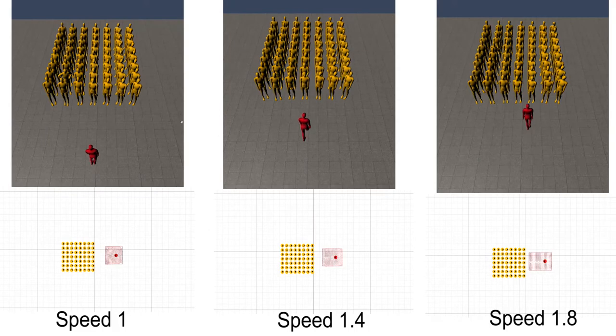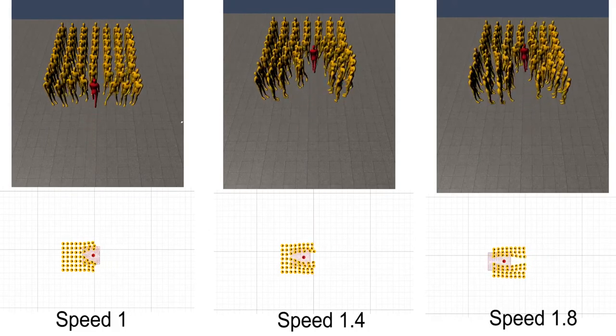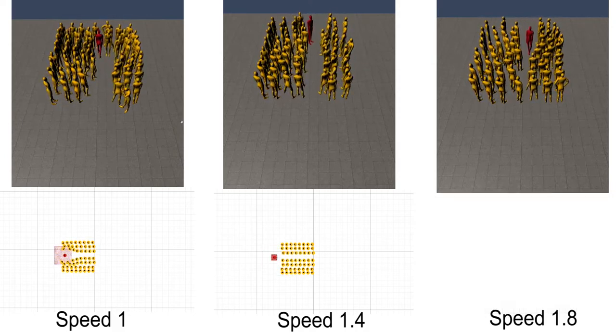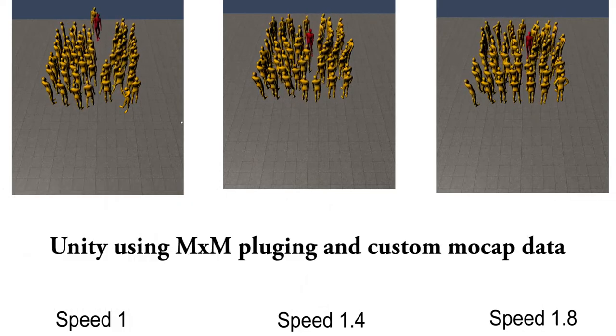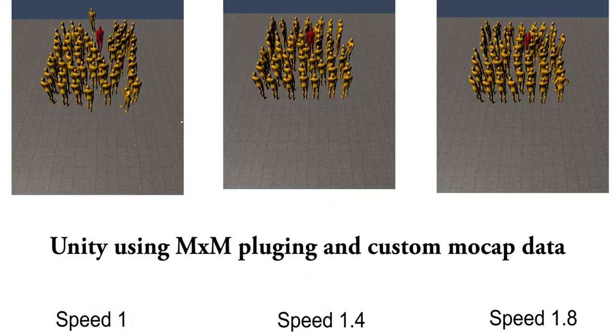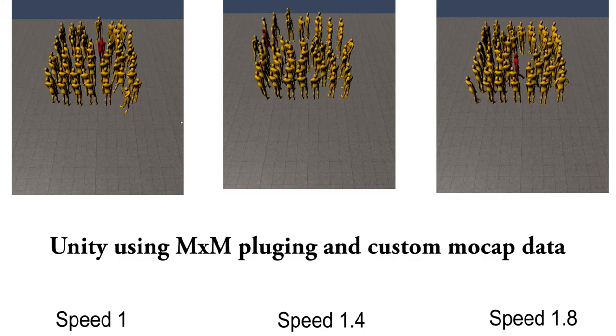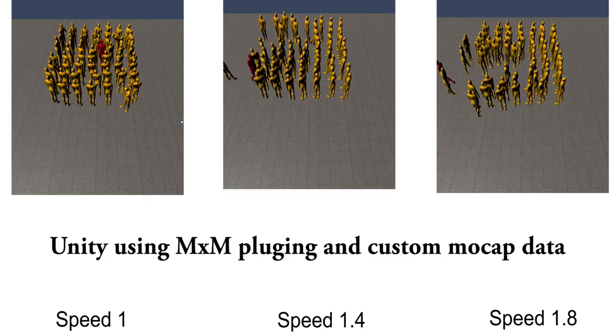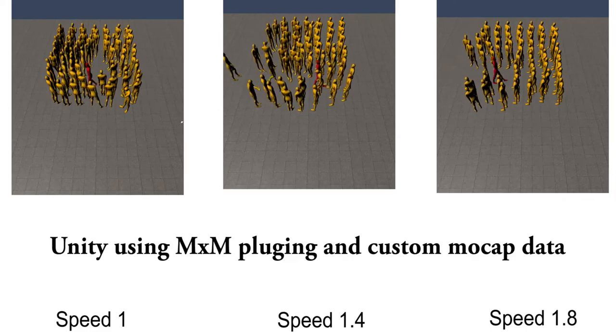By using a motion matching plugin on Unity called MXM, we can animate the trajectories obtained with interaction fields using a custom dataset. MXM selects automatically the closest animation to the trajectories and blends between the animations to transition. This allows us to have realistic motion on top of interaction fields. The red agent is controlled using the keyboard like in the 2D simulation and the animation is in real time.